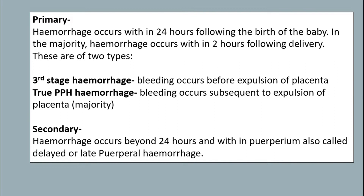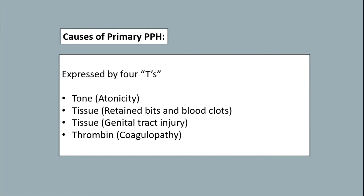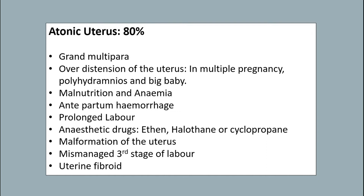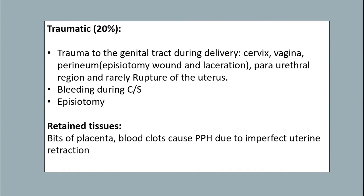Secondary hemorrhage occurs beyond 24 hours and within the puerperium, also called delayed or late puerperal hemorrhage. The causes of primary PPH are expressed by four T's: Tone (uterine atony, about 80%), Tissue, Trauma, and Thrombin. Atonic uterus occurs in grand multipara, over-distension of the uterus in multiple pregnancy, polyhydramnios, and big baby. Other causes include malnutrition, anemia, antepartum hemorrhage, prolonged labor, anesthetic drugs like ether, halothane, or cyclopropane, malformation of the uterus, mismanaged third stage of labor, and uterine fibroid.